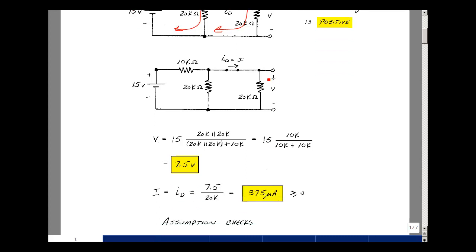Well, the current in the 20k resistor is 7.5 volts divided by 20k, and that's 375 microamps. Is that greater than or equal to zero? Yes. So the assumption checks, and the value of i is this, and the value of v is this. And this is supplemental problem 9.1.